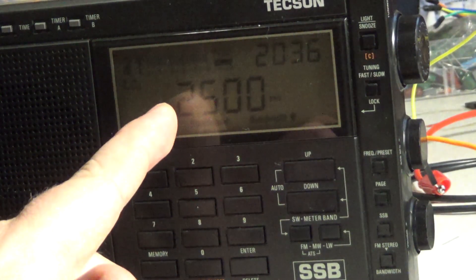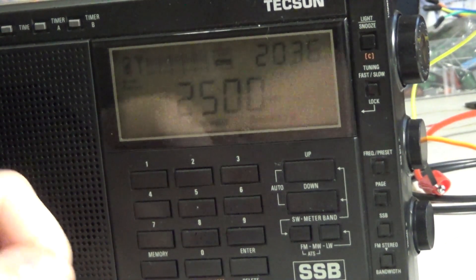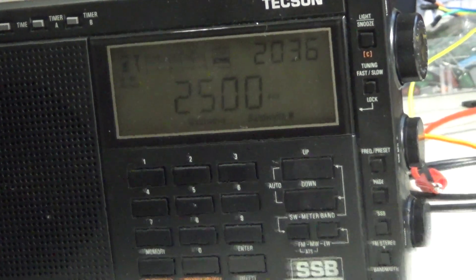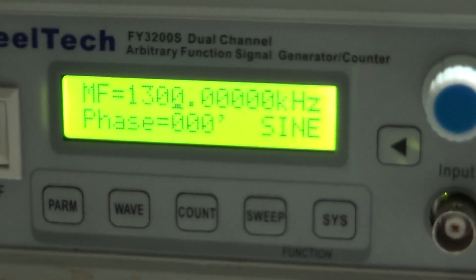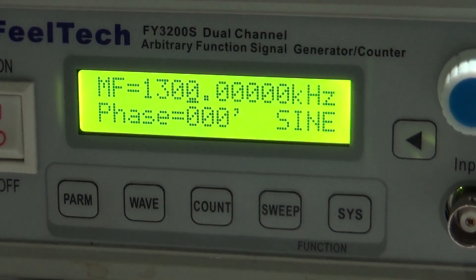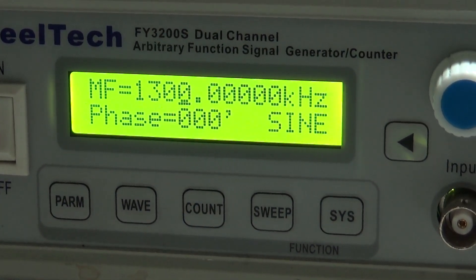So, 2500 take 1200 is 1300. So, we first need to set our local oscillator to 1300 kHz which I've done now.